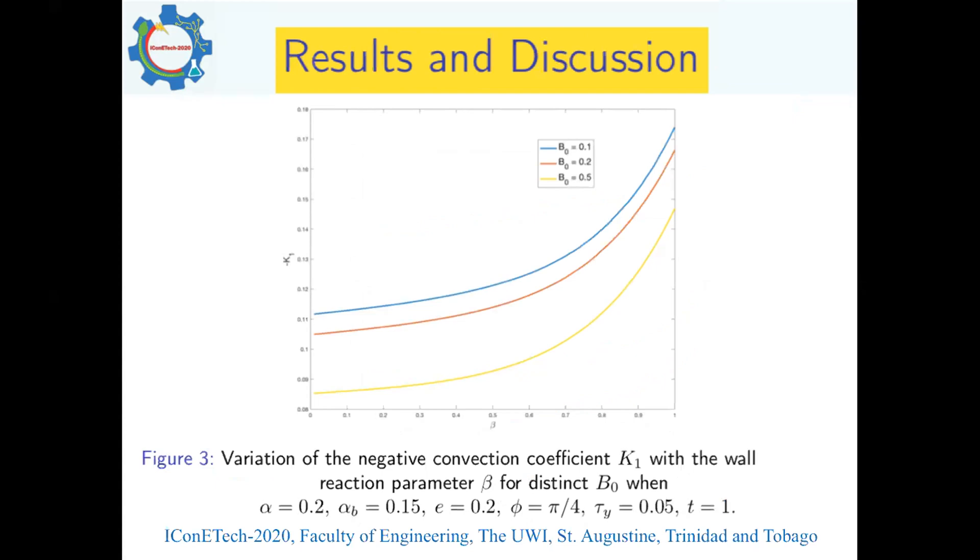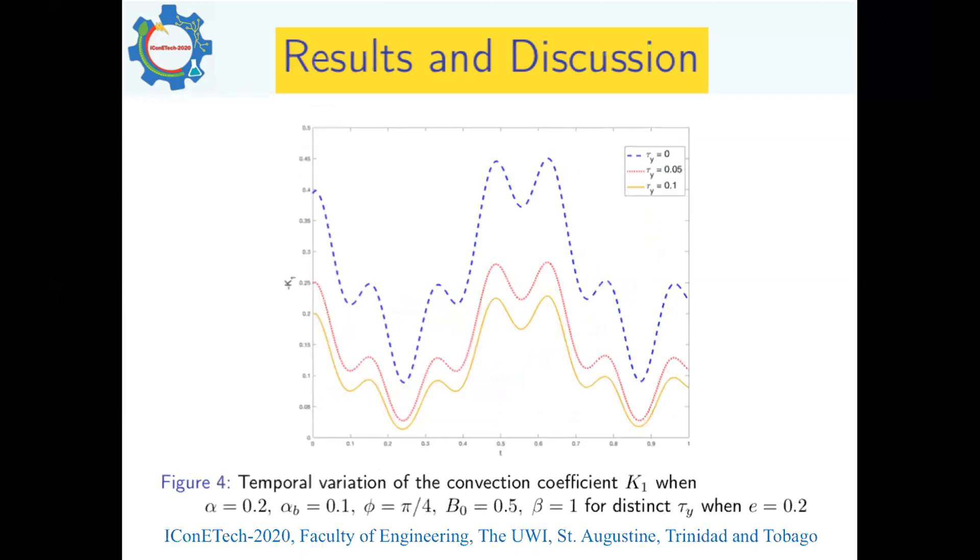Figure three shows variation of negative convection coefficient K_1 with the wall reaction parameter for distinct values of the body acceleration parameter B_0. We observe that as the body acceleration component increases, the magnitude of K_1 decreases, which we attribute to oscillatory inertial forces dominating the flow. Figure four shows time variation of the convection coefficient K_1 for different values of the yield stress tau_y. We see an oscillatory, erratic nature of the flow in the presence of external body acceleration, which is clearly obvious from the graphic.